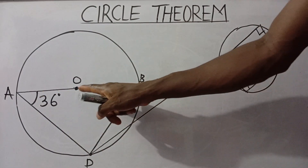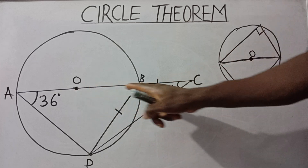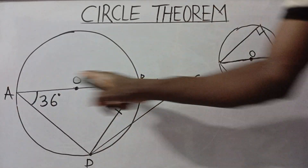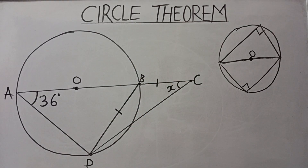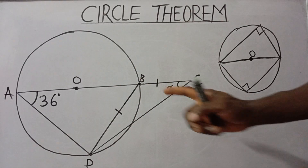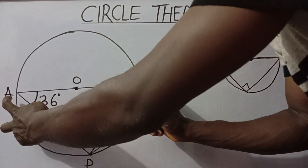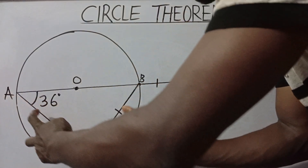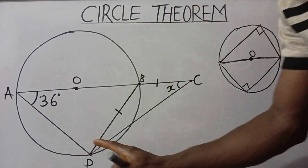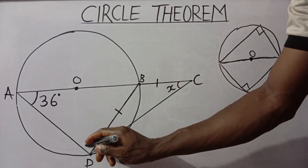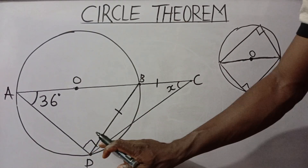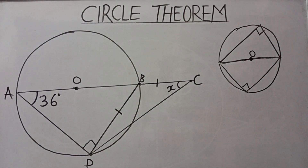Looking at this question, this is the center of the circle and line AB can be called the diameter of this circle. An angle is being subtended from this diameter — from both ends of the diameter. So the value of this angle is, of course, 90 degrees. That gives us a lot of tips on how to get the solution.